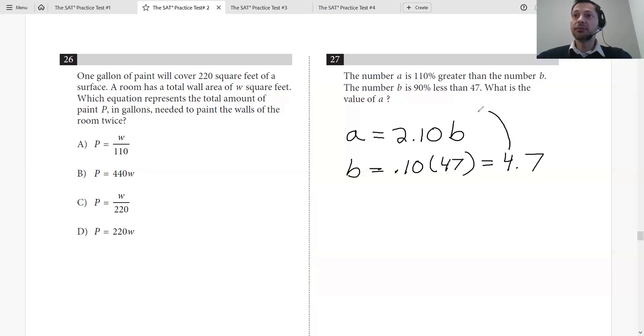Now we can plug that back in. So we have A is 2.10 times 4.7, which is 9.87. And that's your answer.